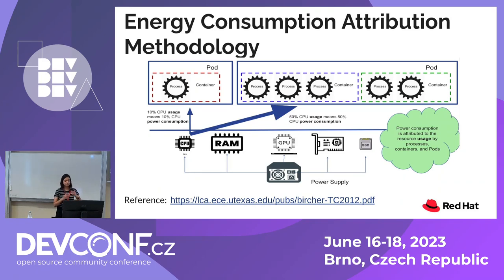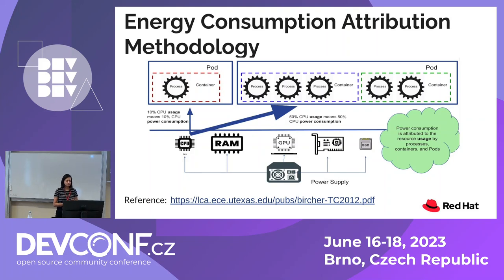We did a bunch of experiments, read a lot of papers, and came to the conclusion that power consumption is attributed to resource usage by processes, containers, pods, etc. As an example — talking only about CPU power consumption — if a pod has one container consuming 10% of the CPU, then you can say it contributed to 10% of total CPU consumption. If it's consuming 50%, it attributed to 50% of CPU power consumption.